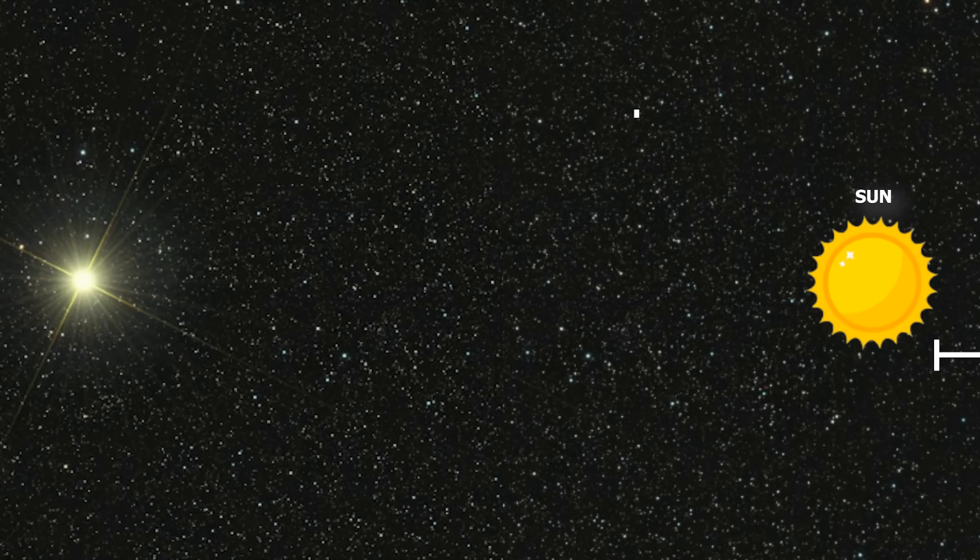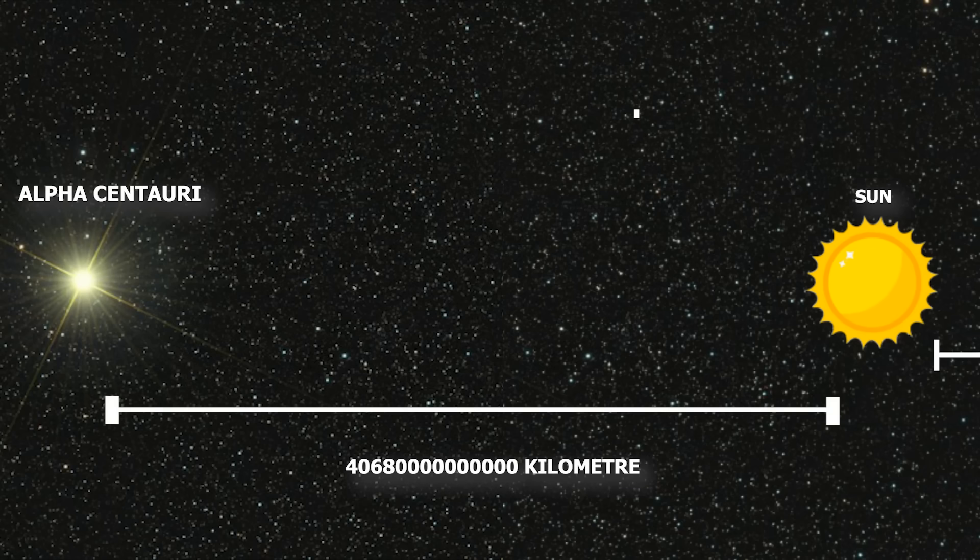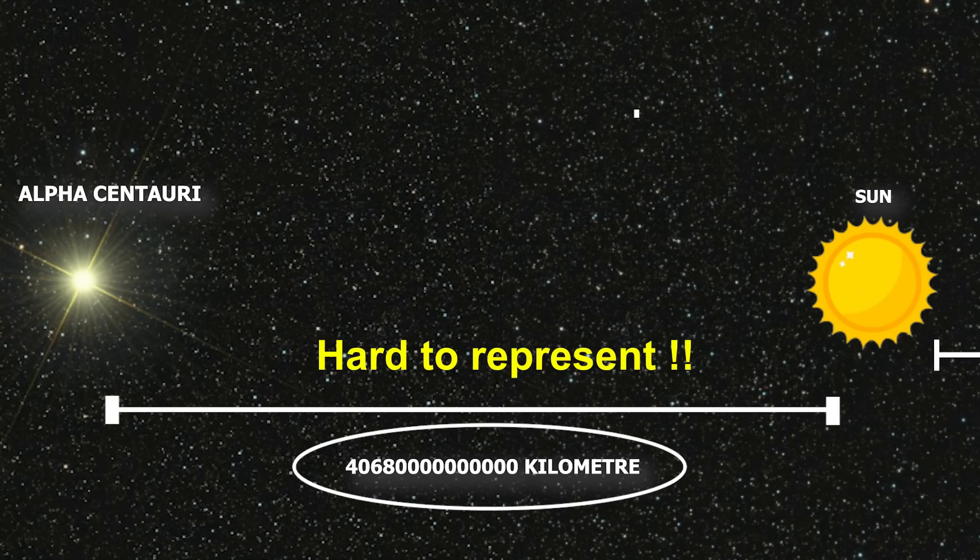The nearest star to our Sun is known as Alpha Centauri. It is believed that the distance between these two celestial bodies is around 40 lakh 68 thousand crore km. If you look at these numbers, they are very large and representing them in km is not that convenient.